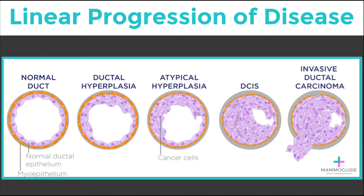This filling of the terminal duct is called ductal carcinoma in situ, or intraductal cancer. Eventually, the abnormal cells will break through the myoepithelial layer and become what's known as an invasive ductal carcinoma, the most common type of breast cancer.